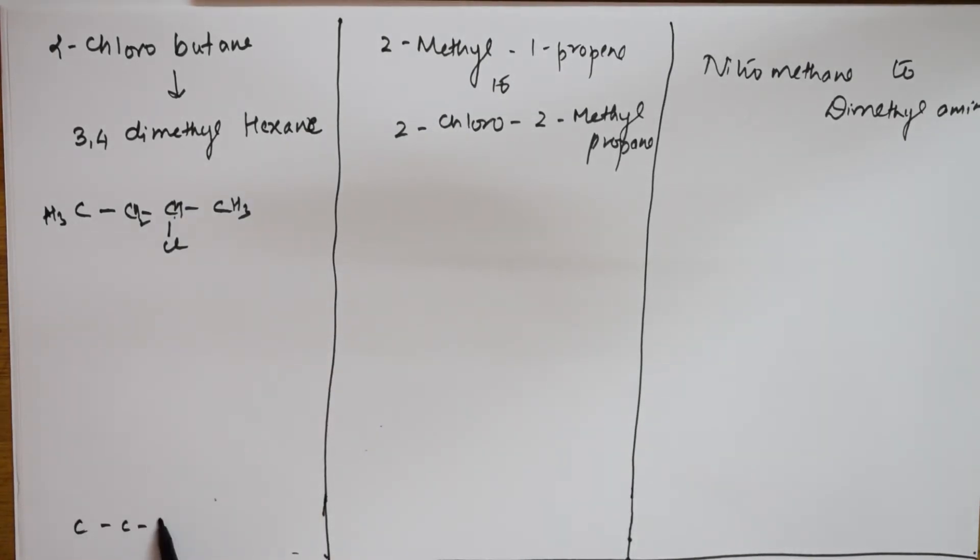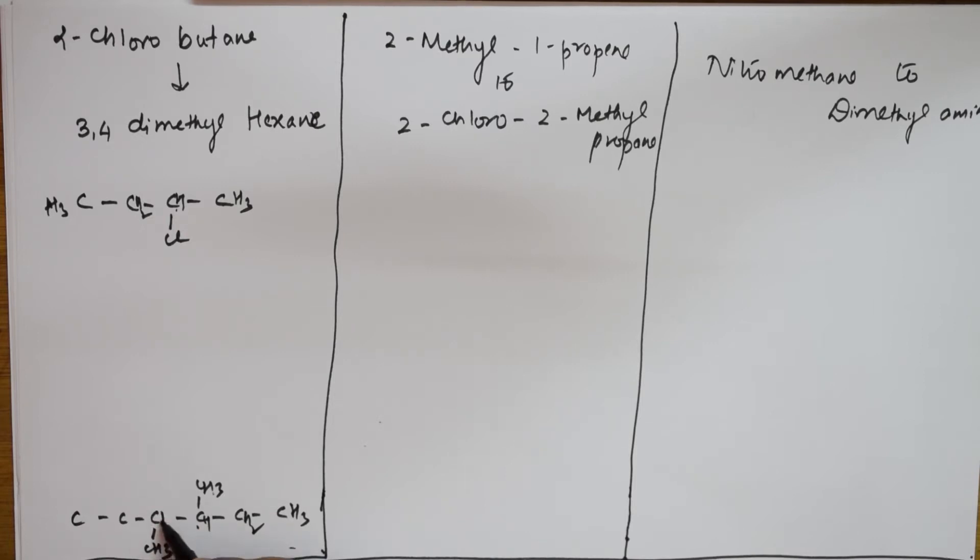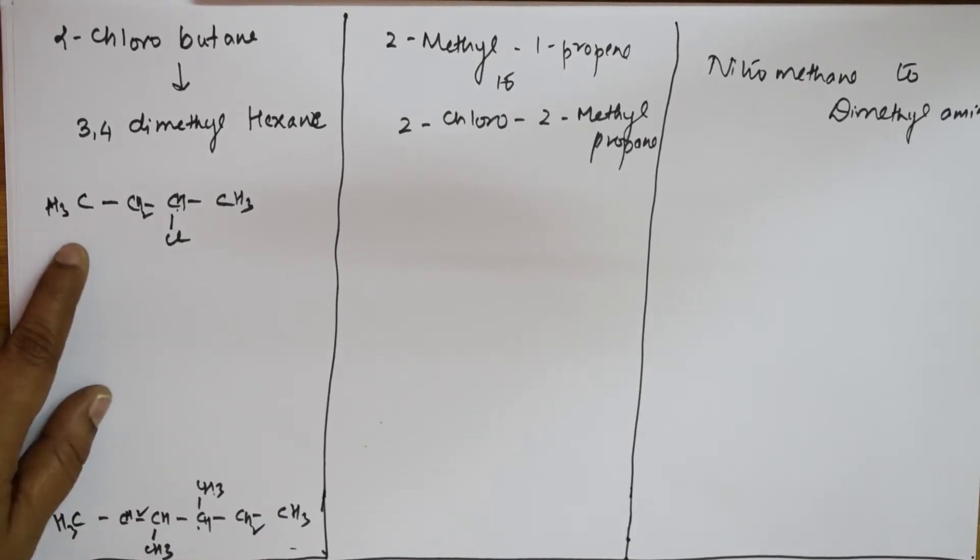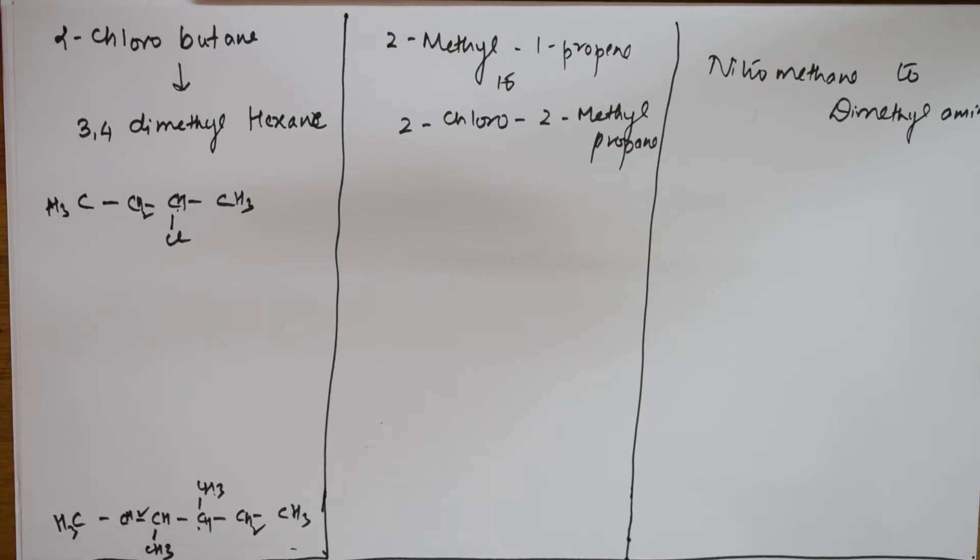Hexane is six carbons, so the parent chain is one, two, three, four, five, six. Starting from here: one, two, three. Three, four - let's write 3,4-CH3 on the third and fourth carbons. Fill in all the hydrogens: CH2, this H, CH3, CH2. Now observe carefully what you have here - one, two, three, four. Here you have one, two, three, four, five, six.